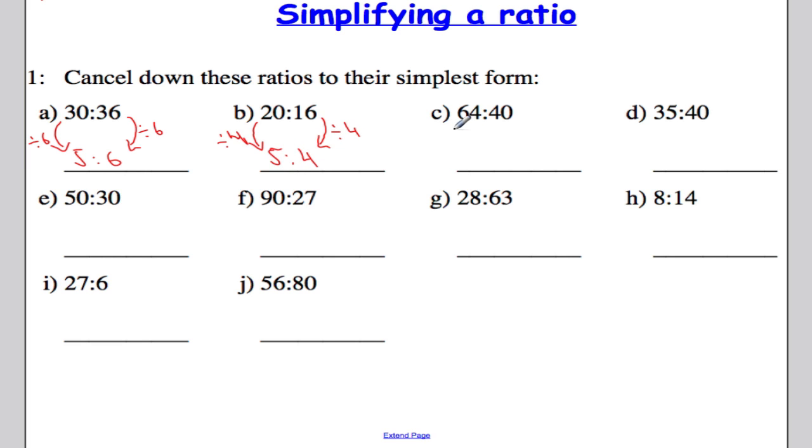Let's have a look at the third one. I'm actually going to do this one in two stages, just in case you can't think of the biggest number. So, if I have a ratio such as this, 64 and 40, and I can't think of the biggest number that divides into both, well, it doesn't matter. We can just do it in a few steps.